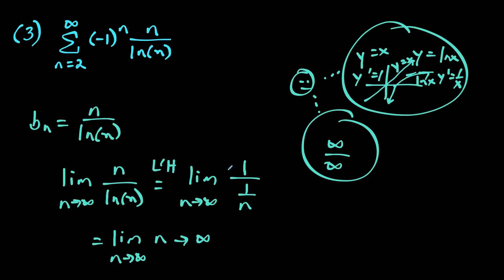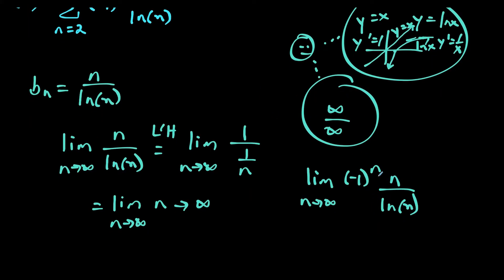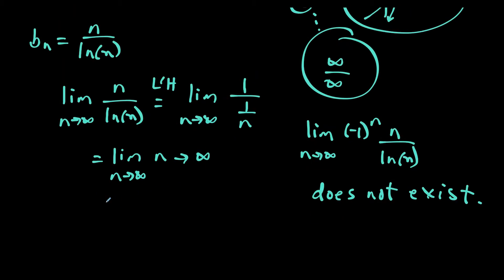This tells us the alternating series test does not apply. Since the b sub n piece went to infinity, we use the nth term test for divergence. We take the limit as n goes to infinity of negative one to the n times n over natural log n. This limit does not exist because n over natural log n goes to infinity while negative one to the n bounces between one and negative one. Since the limit does not exist — and is therefore not zero — by the nth term test the series diverges.